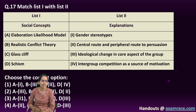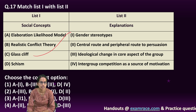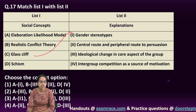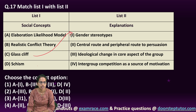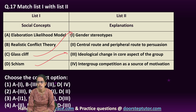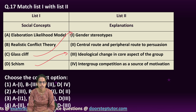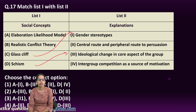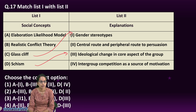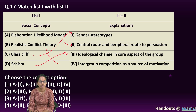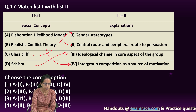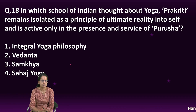Glass cliff is a gender stereotype. Schism refers to an ideological change in a core aspect — a split or differences within a group. The elaboration likelihood model focuses on the central route and the peripheral route. Realistic conflict theory talks about intergroup competition. These are all important concepts.